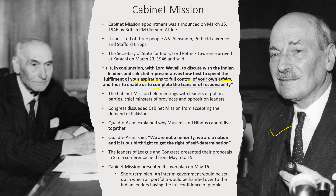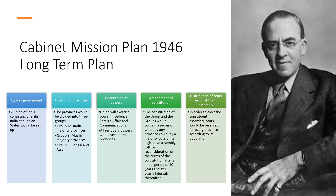The short-term plan simply proposed that an interim government would be set up in which all portfolios would be handed over to Indian leaders having the full confidence of the people. The long-term plan was actually a kind of brief constitution for India — it described how India would work after independence, what kind of state it would be, and gave some constitutional articles.